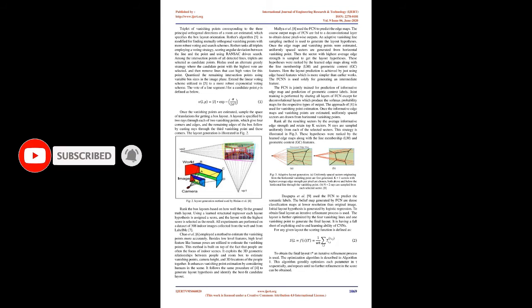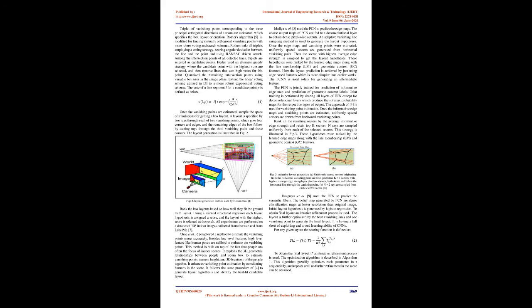Once the vanishing points are estimated, the space of translations is sampled to get a box layout. A layout is specified by two rays through each of two vanishing points, giving four corners and edges, and the remaining edges of the box follow by casting rays through the third vanishing point. The layout generation is illustrated in Figure 2. Box layouts are ranked based on how well they fit the ground truth layout, using a learned structured regressor, and the layout with the highest score is selected. All experiments are performed on a dataset of 308 indoor images.